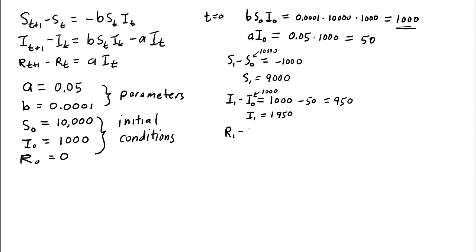Lastly, the removed. The only way folks get removed is if the infective people are no longer infective, so that's the rate, the number A times I, which is 50. We started off with 0 here, so we just have that R1 equals 50.